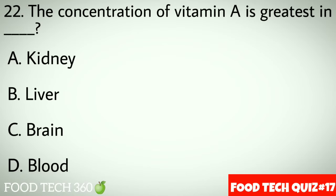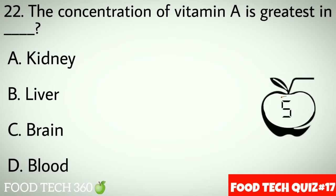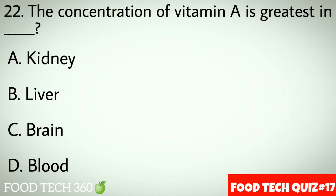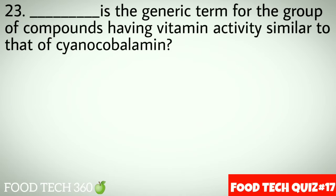Question number 22: The concentration of vitamin A is greatest in dash. Options: A. Kidney, B. Liver, C. Brain, D. Blood. Correct answer: B. Liver.